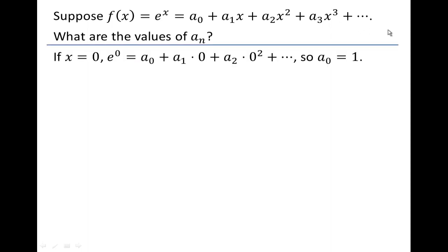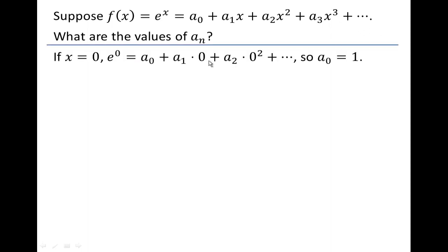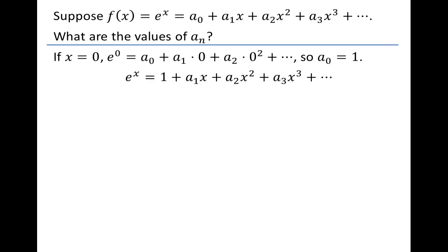The first thing we should know is that if x is equal to zero, then a₁ times x, a₂ times x squared, a₃ times x cubed — all of those terms will be zero. If all of those terms are zero, then a sub zero is going to be the value of e to the zeroth, which we know is equal to 1. So we now know what the very first term looks like.